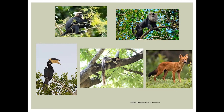The grizzled giant squirrel is a near threatened species present in the Western Ghats. It is a tree squirrel widely found in the Kaveri Wildlife Sanctuary, in the southern part of the Western Ghats. Other animals found here include Malabar civet and rusty giant squirrel.